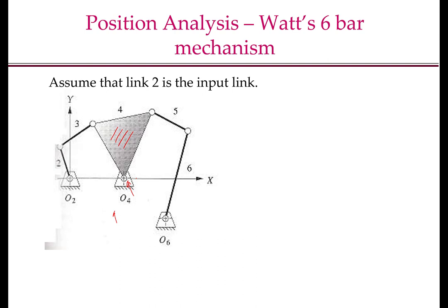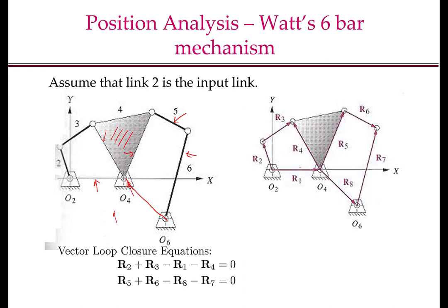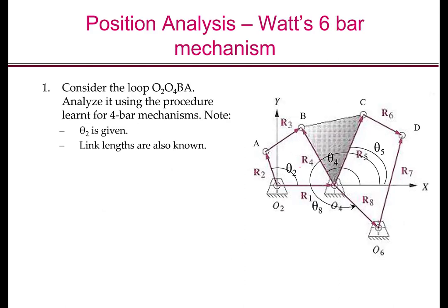To analyze this mechanism, you can see that there are two loops. Links 2, 3, and two others form one 4-bar loop, and another set forms a second 4-bar loop. The first step is to assign a vector to each link. I have assigned vectors R2, R3, R1, and R4 for the loop O2, O4, B, A, as shown in the picture. The loop closure equation for this loop is R2 plus R3 minus R1 minus R4 equals 0.